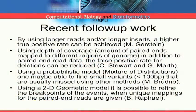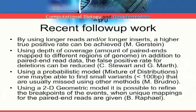There is some recent follow-up work on what we have done. Mark Gerstein's group in Yale showed that by using longer reads or longer inserts, a higher true positive rate can be achieved. That comes as no surprise. Or in Boston College, Gabor Marth and colleagues showed that using depth of coverage information, which is the amount of mappings to a particular location, in addition to the paired-end read data, can reduce the false positive rate. And using other probabilistic models, you can actually focus on the smaller variants that we cannot catch.